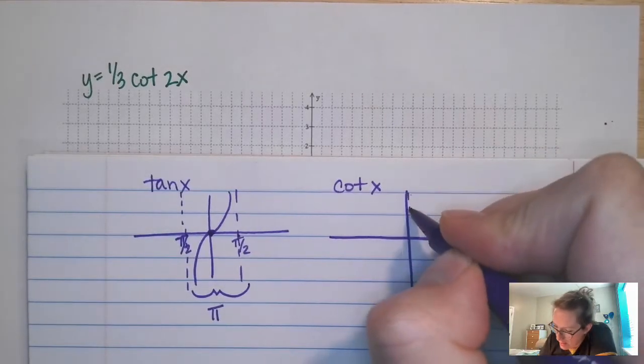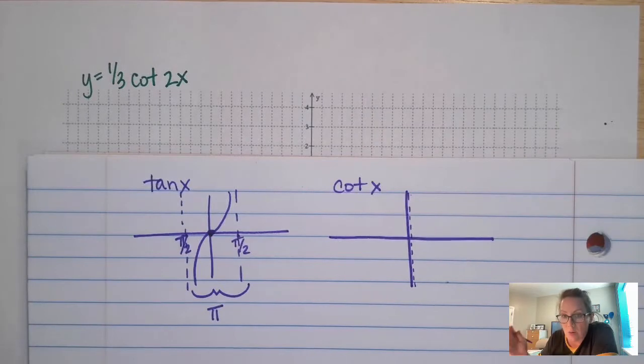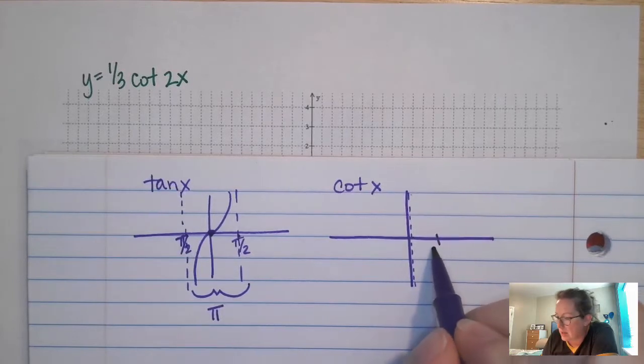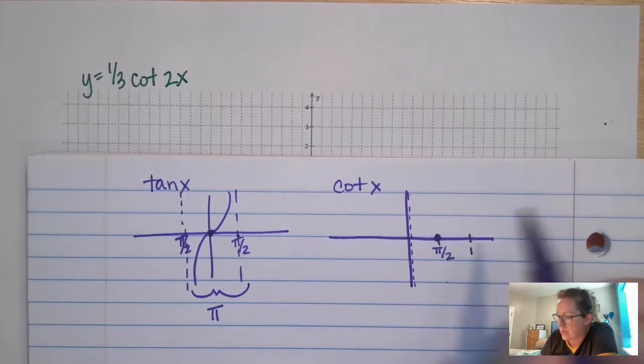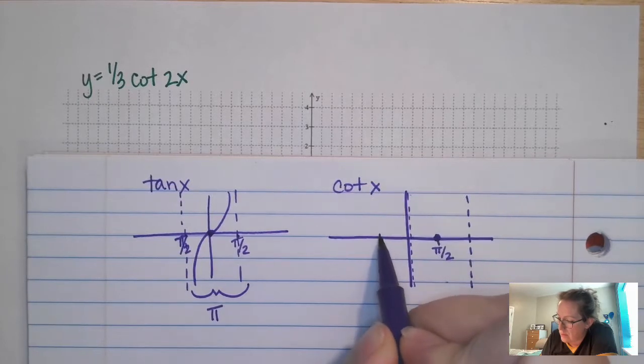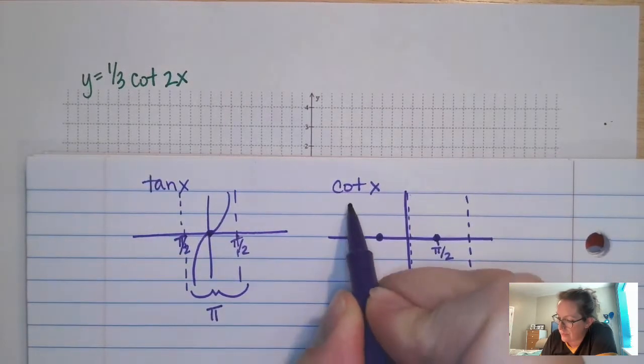So then I'm just going to draw an asymptote right next to, technically it's on the y-axis, but if I draw a dashed line on top of a solid line, I'm not going to see it. So I draw it right next to it. And then pi over 2, zero. And then pi over 2 length out, that's going to be an asymptote. Pi over 2 out, that's a zero. Pi over 2 out is an asymptote.